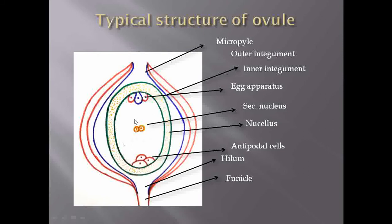Whenever an embryo is formed from cells present inside the embryo sac, that type of embryo is categorized as true polyembryony. Whenever there is development of an embryo from cells present outside the embryo sac, that embryo is categorized as false polyembryony. True polyembryony is further categorized under cleavage and adventive types.